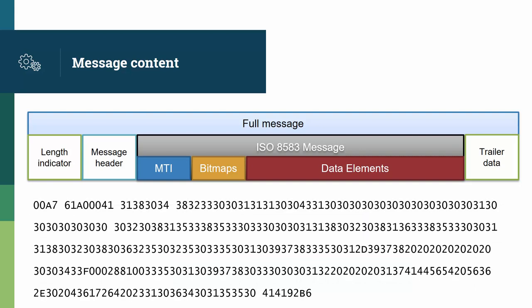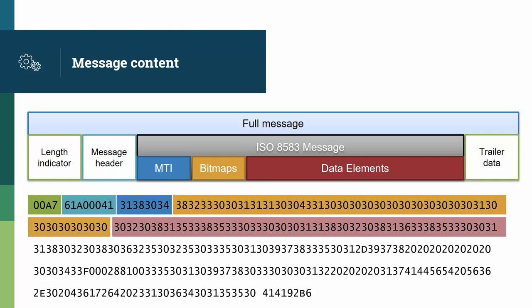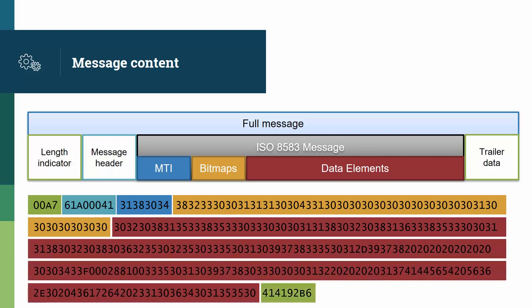Here is another example of a full message. This one is coming from a terminal. It starts with a length indicator on 2 bytes, indicating to the acquirer host how many bytes of message to expect. It is followed by a short message header, and then is the ISO 8583 message, starting with the message type identifier, followed by the bitmaps, which are themselves followed by the data elements. And this one finishes with a 32-bit CRC checksum as trailer data. This message looks longer than the previous one because the encoding format is different. As we said before, the encoding format is not defined by ISO 8583 and is left as an implementation choice for the top layer protocol. In this case, you can quickly see that the message type identifier and the bitmaps are coded in ASCII, so they look much longer than the previous example where they were just sent in binary format.